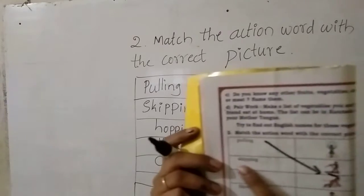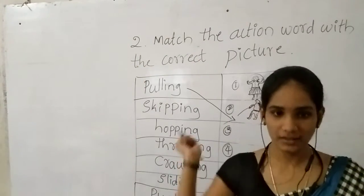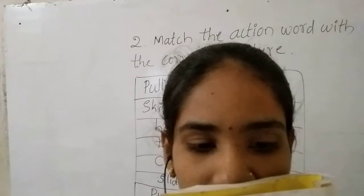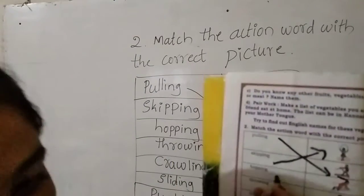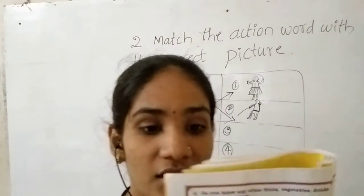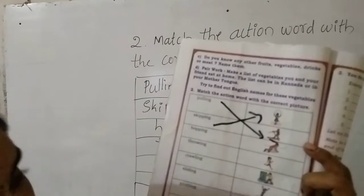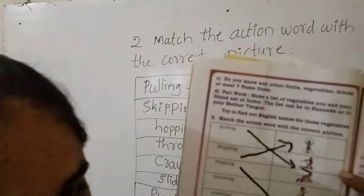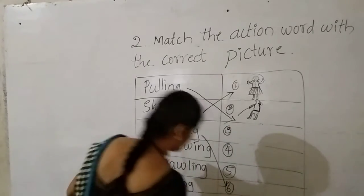Who is skipping here? The first picture — what action is it telling? Skipping. The first word is skipping and the first picture is the correct match. Next: hopping. Hop means jumping. Who is jumping here? The sixth picture — the girl is jumping. So hopping matches with the sixth picture.